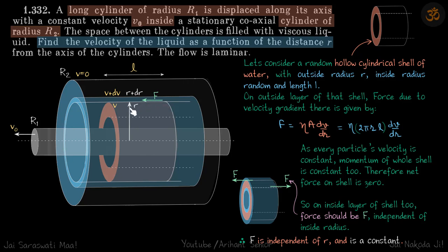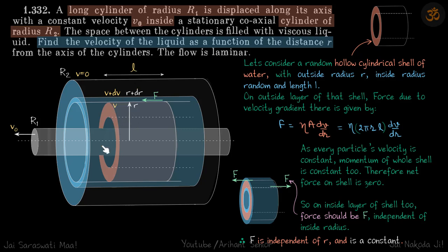We consider a shell which is completely made of liquid with hypothetical boundaries. Let's take a random hollow cylindrical shell of liquid with outside radius r, some inside radius, and length l. It can be any quantity — that doesn't matter.